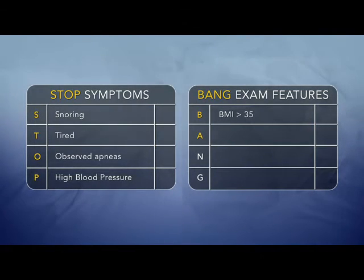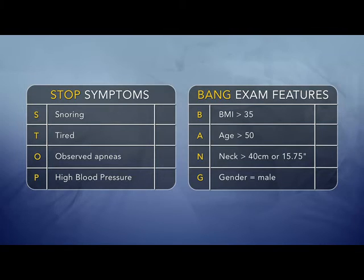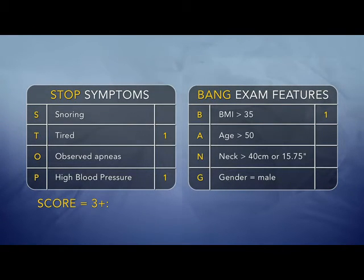The BANG physical exam features include: B for BMI — a BMI greater than 35; A for Age — age greater than 50; N for Neck circumference — a neck larger than 40 centimeters, or approximately 15 and three-quarter inches; and G for Gender — is your patient male? Give your patient one point for each one of these eight features.